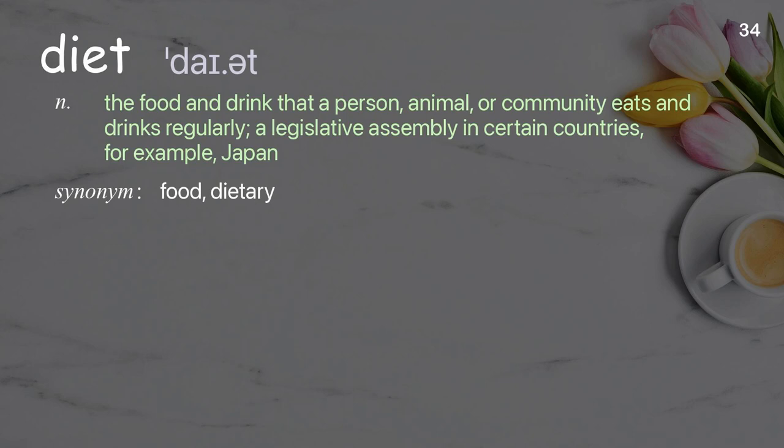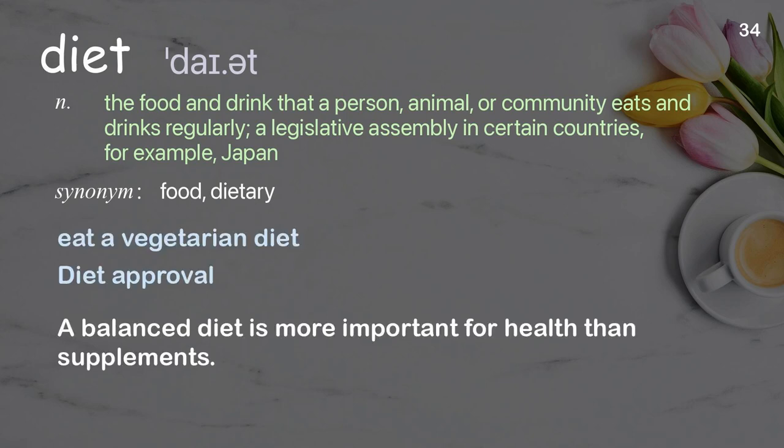Diet: The food and drink that a person, animal, or community eats and drinks regularly; a legislative assembly in certain countries, for example, Japan. Examples: Eat a vegetarian diet, Diet approval. A balanced diet is more important for health than supplements.